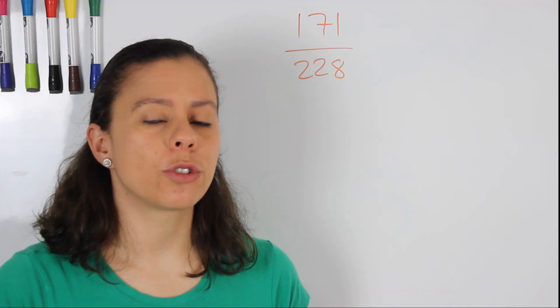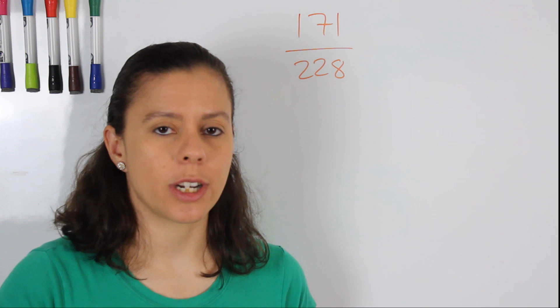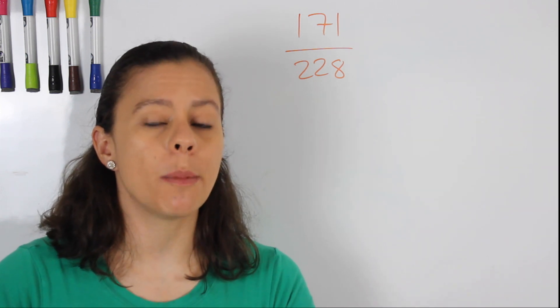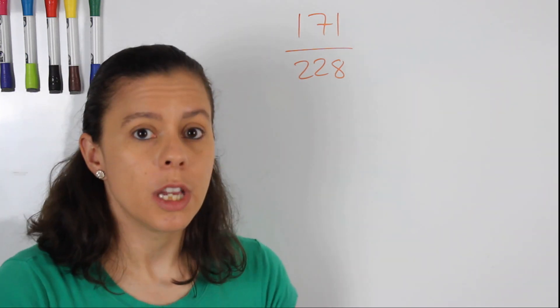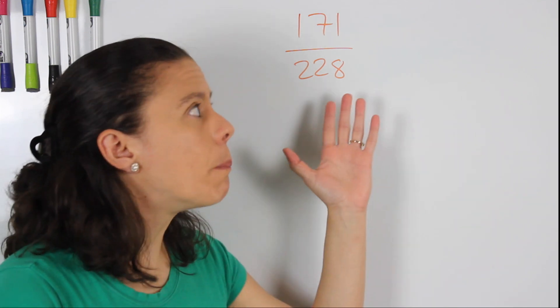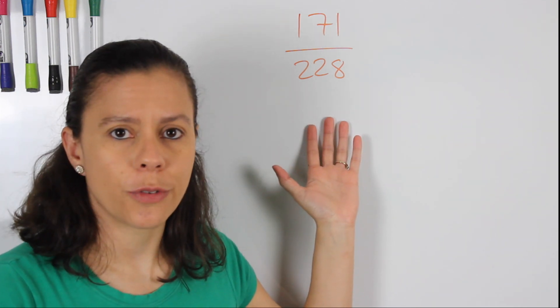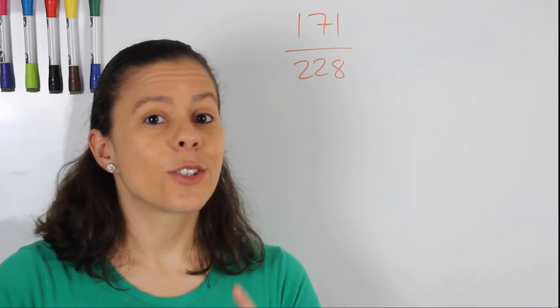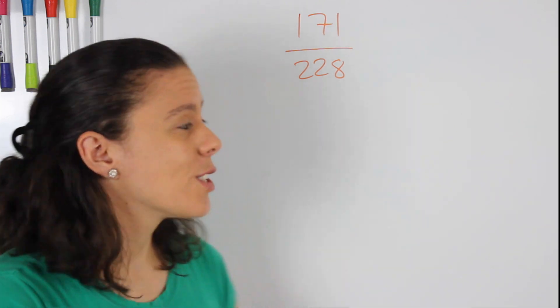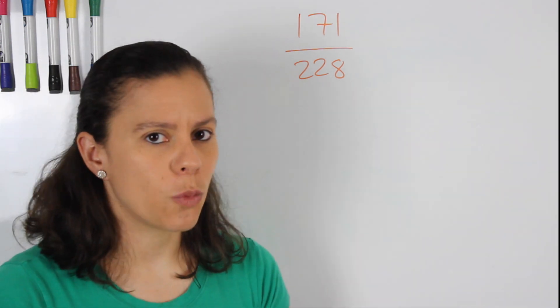So the first thing that you're going to do when you're simplifying any fraction is that you're going to find the greatest common factor between the two numbers, right? In this case, you have two big numbers. That's a lot of factors to look for. So my advice is start with a smaller number. So in this case, we're going to look for the factors of 171.